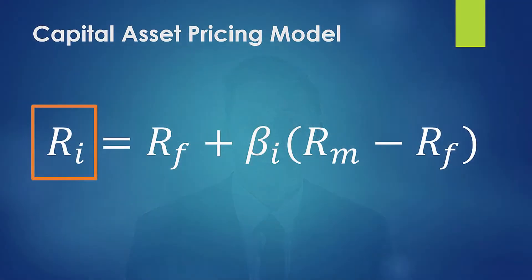We're going to start by looking at the first variable, and this is the return of your investment — this is what we're trying to solve for. The key to remember here is that risk and return are related concepts. You're trying to determine what return you should expect to receive to compensate you for holding this risk, so we're really dealing with risk rates here.